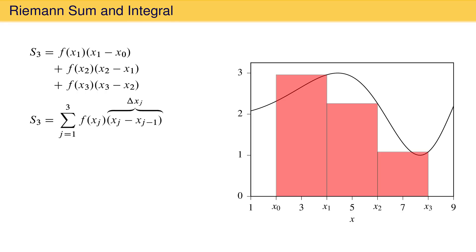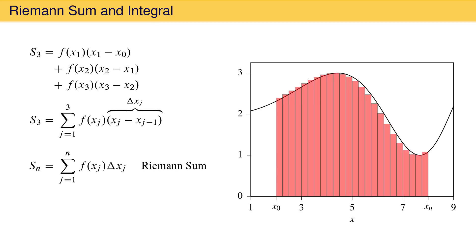Three rectangles do not provide a very good estimate of the area under the curve from x0 to x3, so we might want to include more rectangles. We take the height of the jth rectangle times its width and sum from j equals 1 to an arbitrary number of rectangles n. This is S sub n, called a Riemann sum. But S sub n only becomes a good estimate if we take the limit as n goes to infinity. In that limit, S sub n is written symbolically as the integral from x0 to xn of f times an infinitesimal width dx.